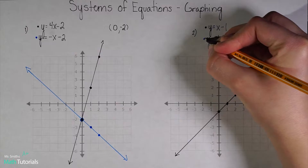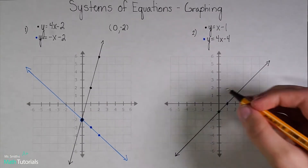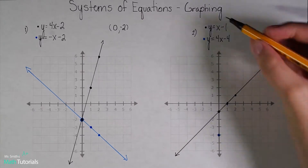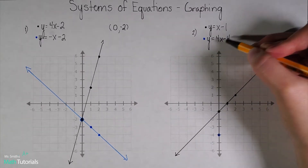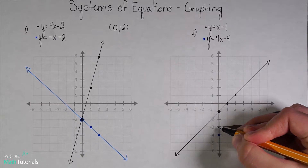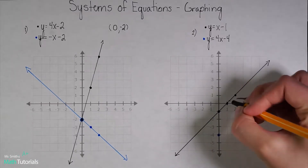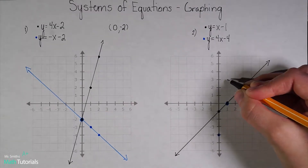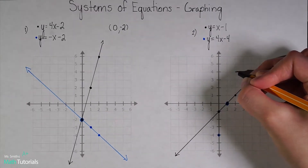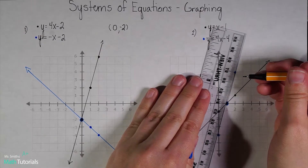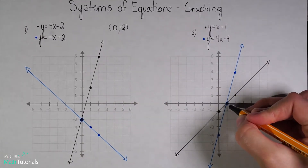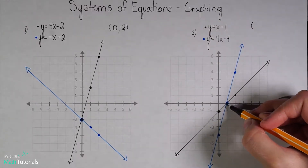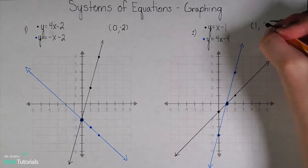I'm going to graph my second line in blue. My y-intercept is at negative 4, and my slope tells me to go up 4, right 1. I keep plotting up 4, right 1. We can clearly see that these two lines intersect at the point 1, 0.